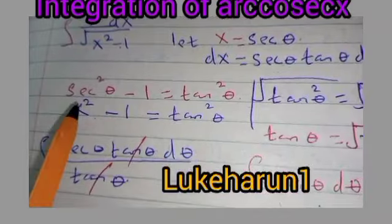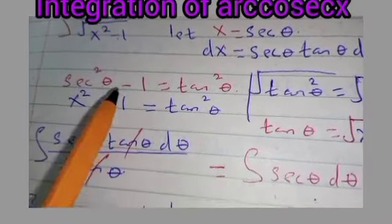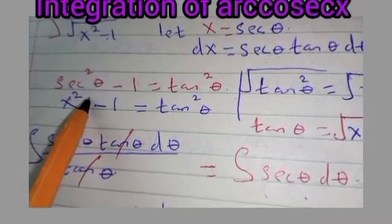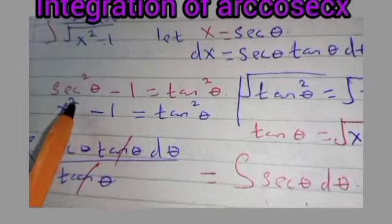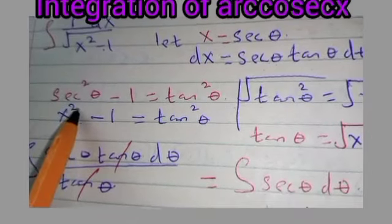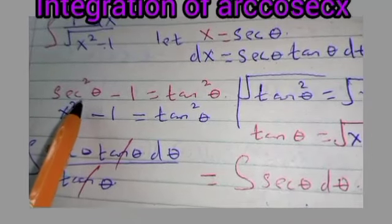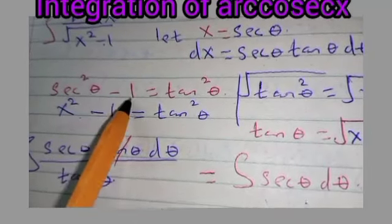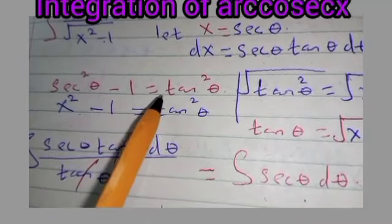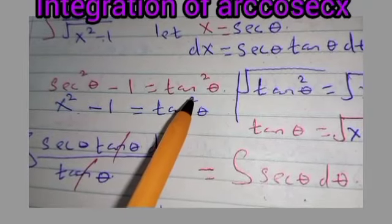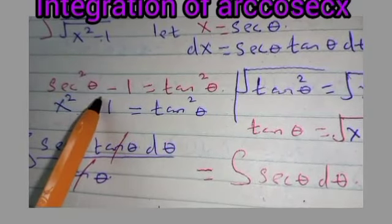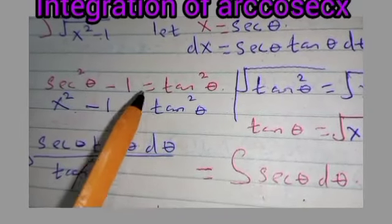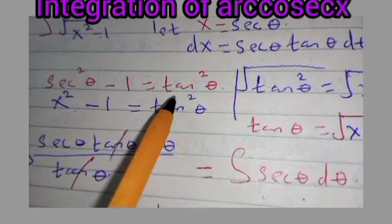Next, we make use of the trigonometric identity: sec²θ minus 1 is equal to tan²θ.